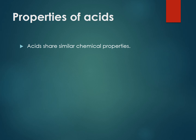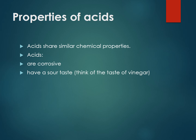Some of the properties of acids are that acids have similar properties — that's why they're called acids. Acids are corrosive; in other words, they will burn or eat away at substances. They have a sour taste — if you think of vinegar or lemon juice, you'll know that they taste quite sour. They turn blue litmus paper red.